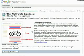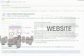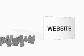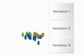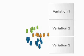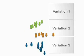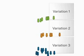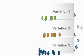Website Optimizer does the rest. As traffic arrives at your site, Website Optimizer works in the background, dividing visitors into different groups and presenting each group with a unique page variation.